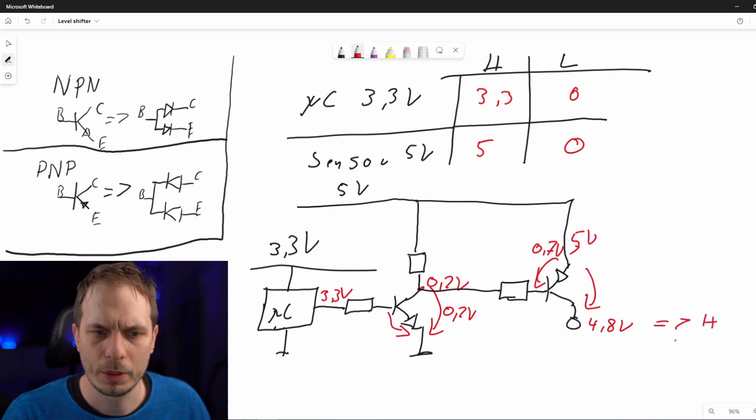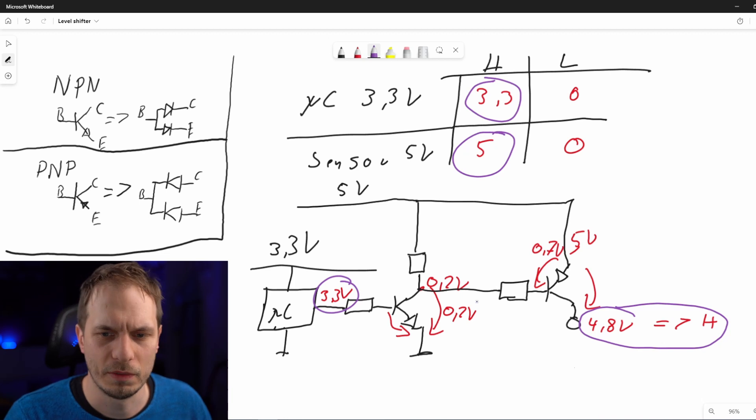What I did is that I have here the 3.3 volts at the microcontroller and it gives me 4.8 volts at a high stage, which is really close to 5 volts.